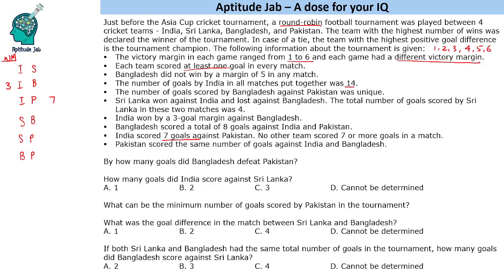Since India scored 7 goals against Pakistan and no other team scored 7 or more goals in a match, 7 is the highest. We need a victory margin of 6, and each team scores at least 1 goal, so the only possible scenario for victory margin 6 is 7-1. Therefore India vs Pakistan must have ended 7-1. Also, Pakistan scored the same number of goals against India and Bangladesh, so Pakistan scores 1 goal here as well.